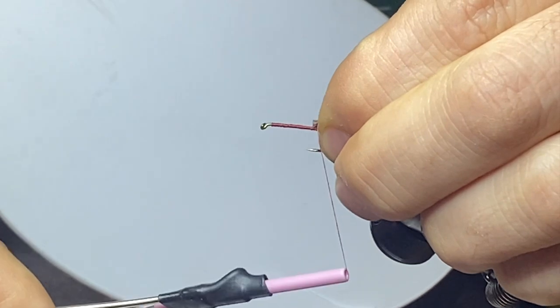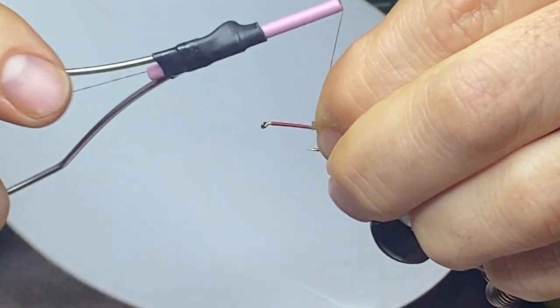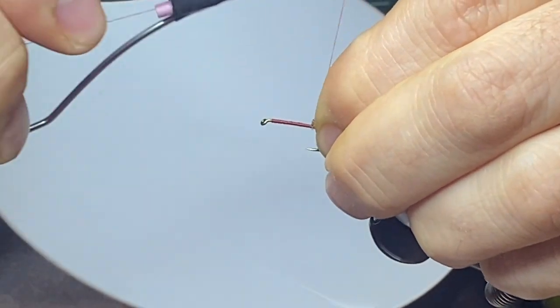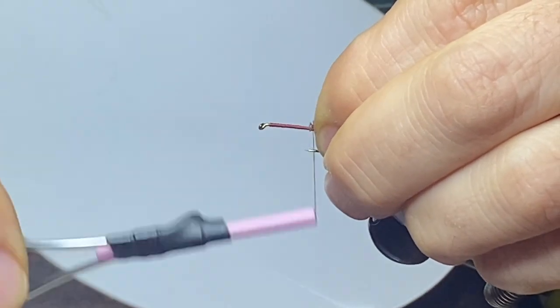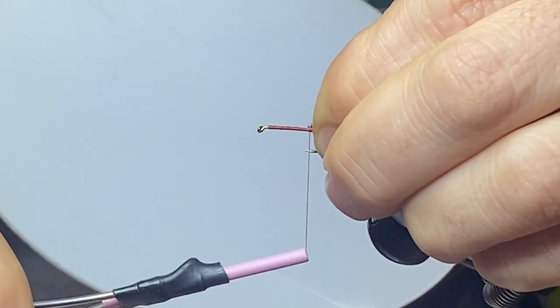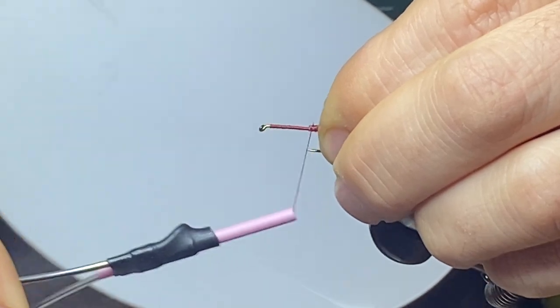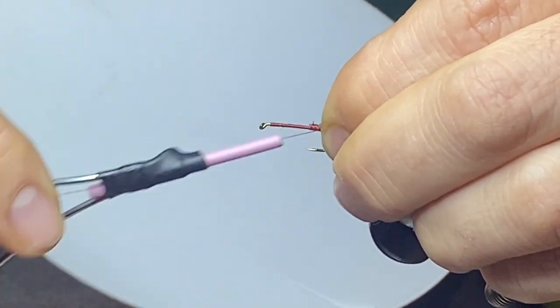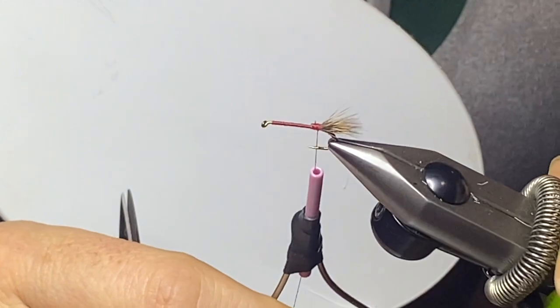We want this more or less on top of the hook, so soft wrap, soft wrap, do a three, try to keep on top of the hook, and then I hold it in place and just wrap through those flared deer hair parts, stems I guess. There we go.